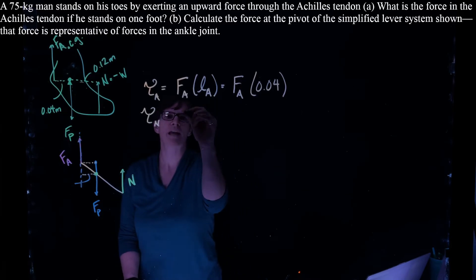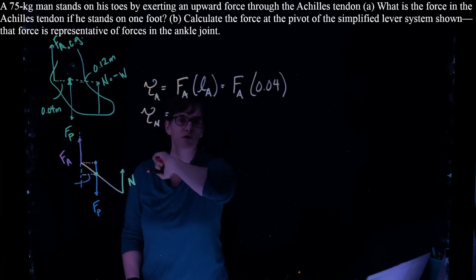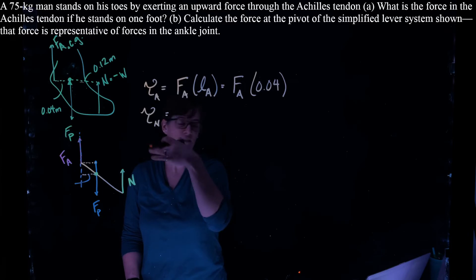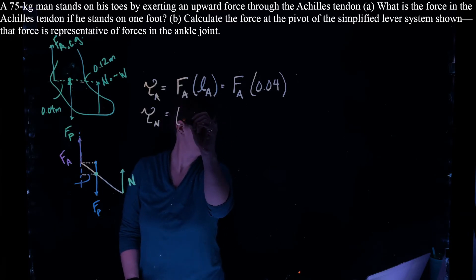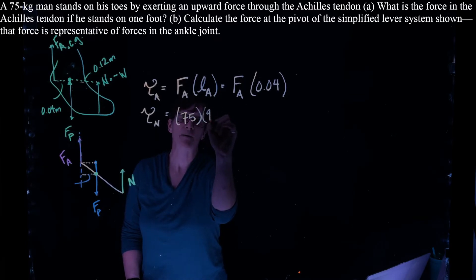For the normal force, we have the normal force, which we're told is equal to negative the weight, so the magnitude of the weight. So the weight is 75 times 9.8.